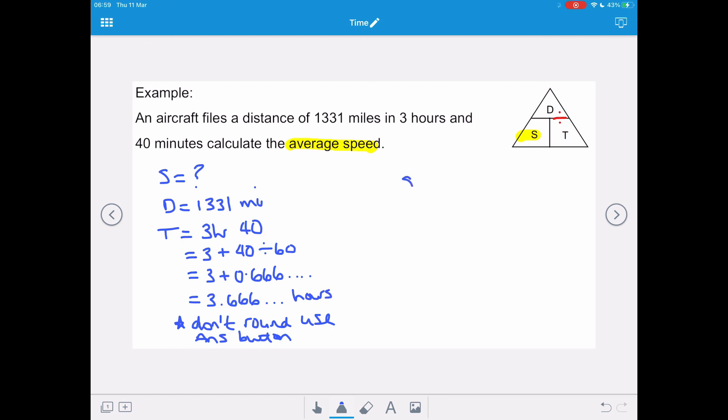So, we're going to write down our formula. Speed equals distance over time. And that is 1331 over 3.666 recurring. Remember, use your answer button. And your final answer is going to be 363. And our speed is in miles per hour.